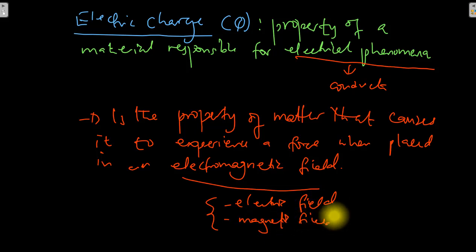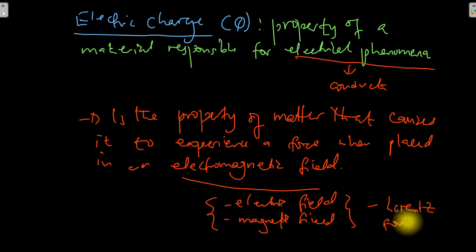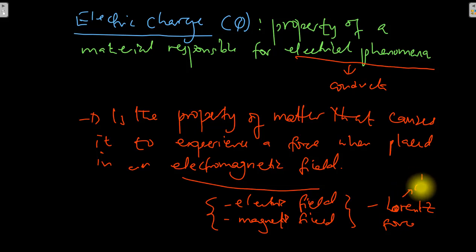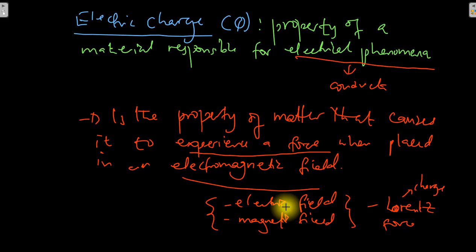Because of electric charge, if matter or a material is placed in one of these fields or a combination of both, it experiences what we call a Lorentz force. This Lorentz force is a force that acts on a material because of the existence of charge in that material. It is charge that causes a material to experience a force when placed in an electromagnetic field. We will explore electric fields in more detail later on.